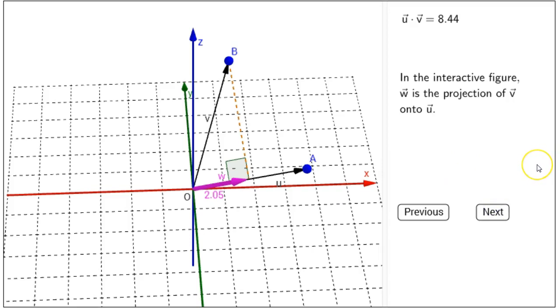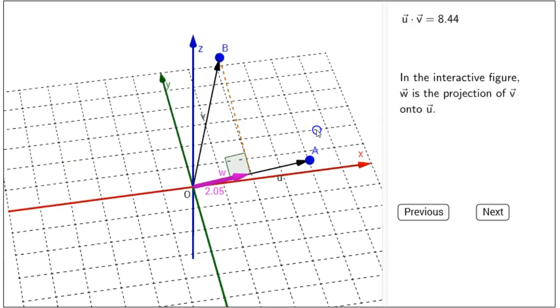In the interactive figure, W is the projection of V onto U. So, in the figure, the vector W is a thick purple vector that lies in the direction of U.